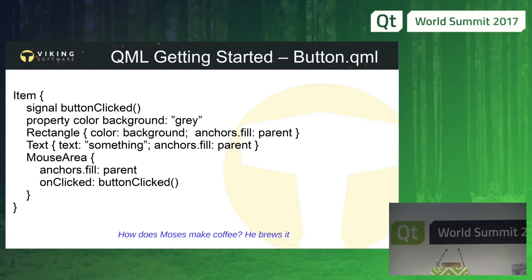One thing I will say about this is anchoring. In C++ and widgets you used layouts, and we do have sort of layouts in QML. But a lot of the time, what you do instead is use anchors — when you have an item, you anchor it on the side, on the top, or on the bottom. Here I just fill it out completely. It's something you'll have to learn to handle as a C++ programmer.